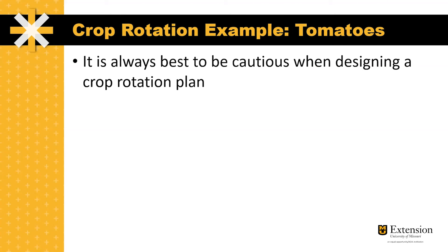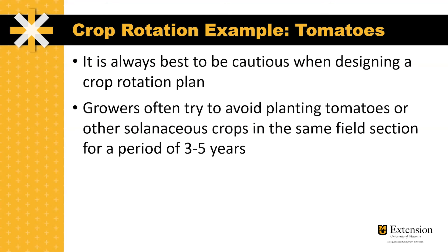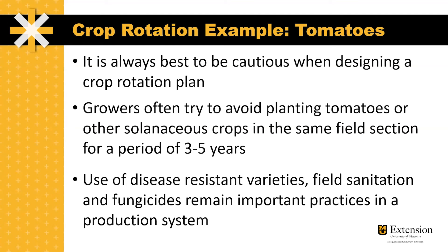It's always best to err on the side of caution when designing a crop rotation plan. Growers often try to avoid planting tomatoes or other solanaceous crops in the same field for a period of three to five years. Use of disease-resistant varieties, field sanitation, and fungicides remain important practices in a production system.